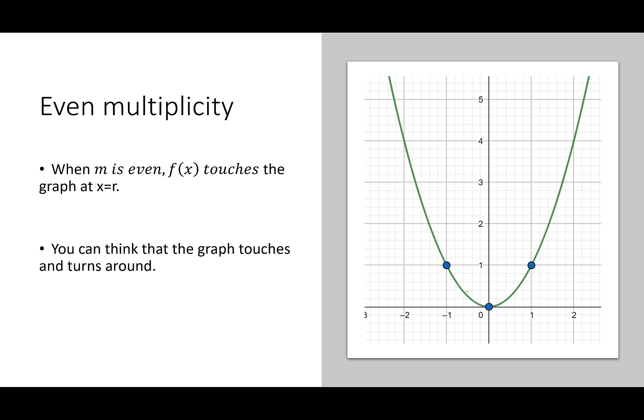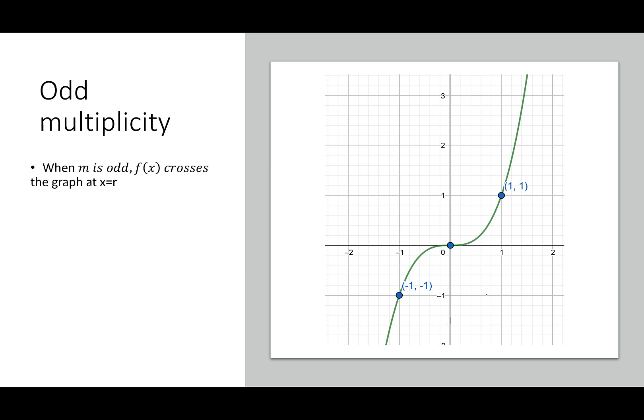Multiplicities are super important because they tell us a lot about the graph. When m is even, f(x) touches the graph at x = r — like x², which comes down and goes back up, touching the origin without crossing. When m is odd, the graph crosses at x = r — it's above before the zero and below after. Think of it as: evens touch, odds cross.